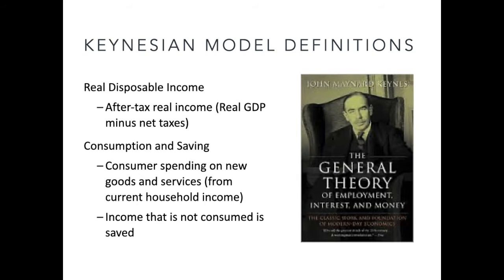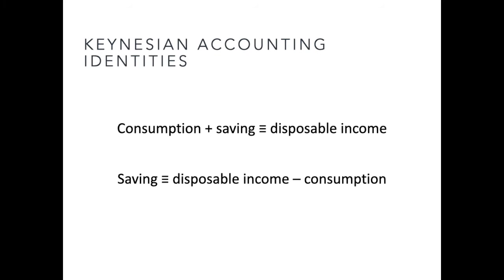There are two things that we can do with real after-tax income: we can consume goods and services, or we can save part of that income. Consumer spending is defined as the spending on new goods and services from current household income. Income that is not consumed is, of course, saved.